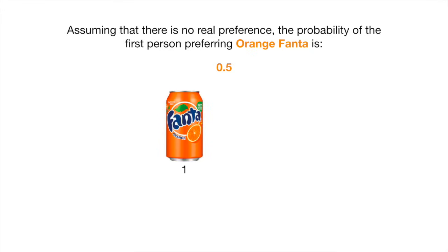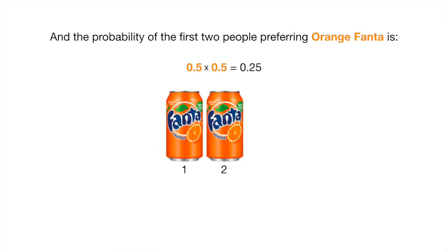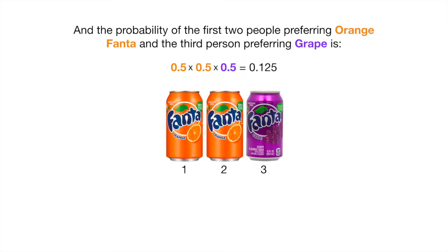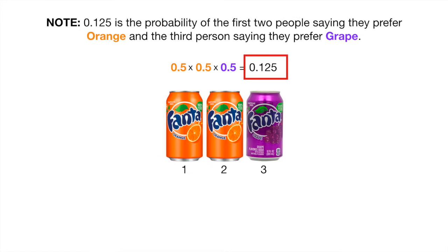Assuming that there is no real preference, the probability of the first person preferring orange Fanta is 0.5. The probability of the first two people preferring orange Fanta is 0.5 times 0.5, which equals 0.25. And the probability of the first two people preferring orange Fanta and the third preferring grape is 0.5 times 0.5 times 0.5, which equals 0.125. Note: 0.125 is the probability of the first two people saying they prefer orange and the third person saying they prefer grape.